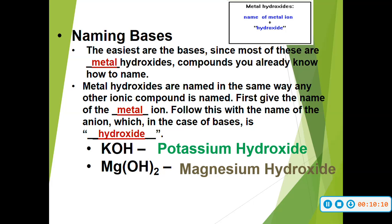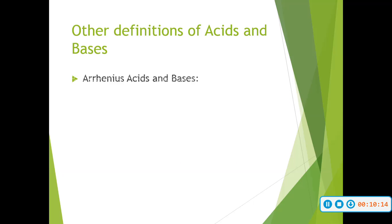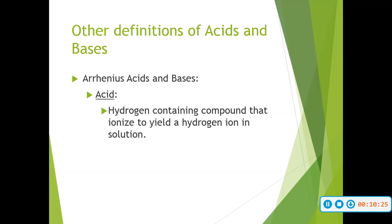A lot easier than naming acids. So there are other definitions of acids and bases. Arrhenius defined an acid as a hydrogen-containing compound that ionizes to yield a hydrogen ion in a solution — it focuses on what is being produced as a product, and acids produce a hydrogen ion.